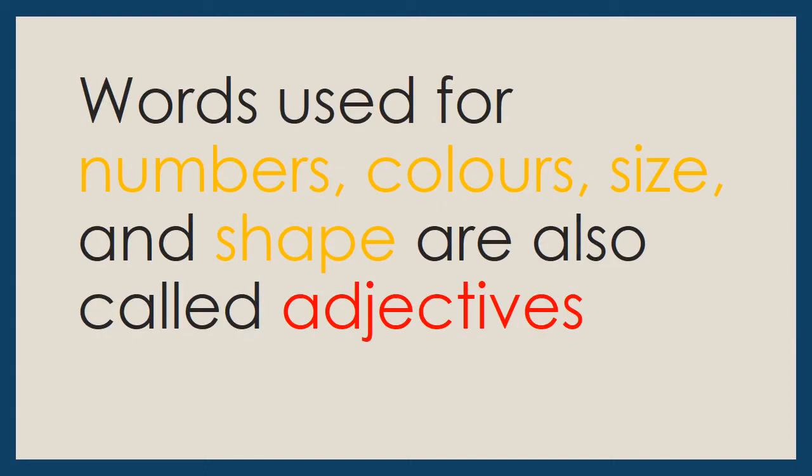So what did we learn? Words that describe the quality of a person, animal, place or things are called adjectives. Words used for numbers, colours, size and shape are also called adjectives.